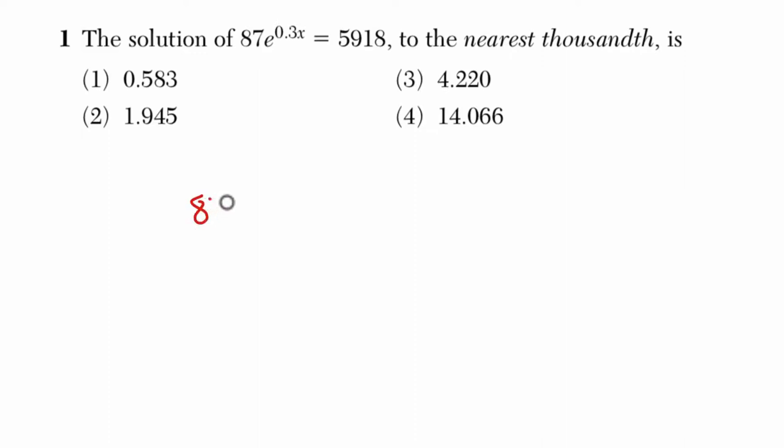Alright, so the first thing I would do is write this out. We have 87 times e to the 0.3x. I write it out so I can slow down and think about it. And I see that we're trying to find the value of this variable right here. So we're going to use some kind of logarithmic approach.